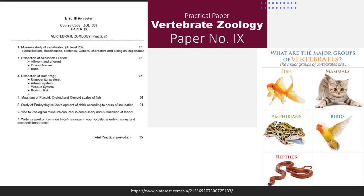This is your first practical paper, Vertebrate Zoology with paper number 9. In this paper there will be study of museum specimens of vertebrates — three specimens from each class. Since we have five classes, we will study a total of 15 specimens.